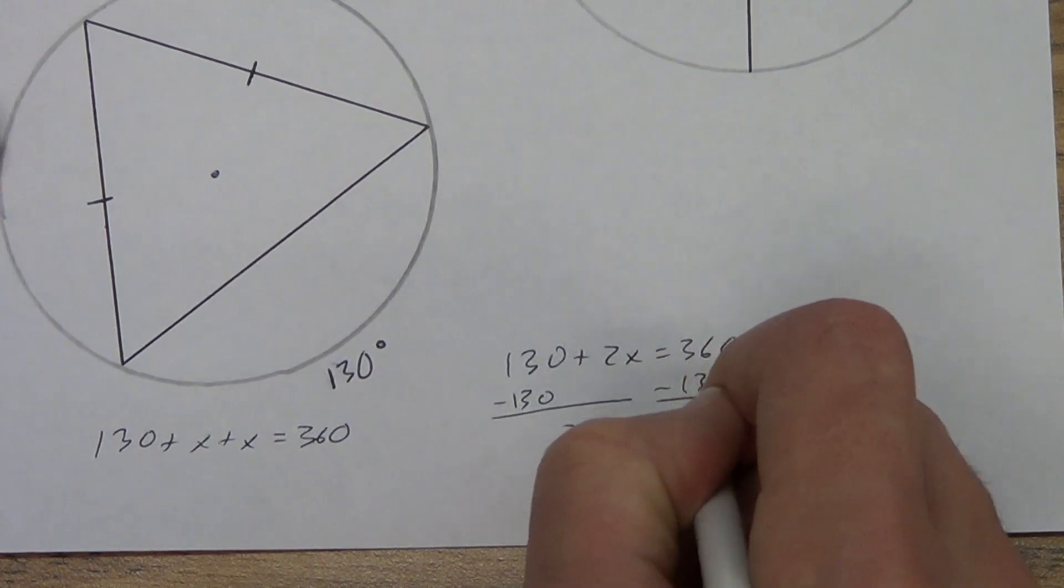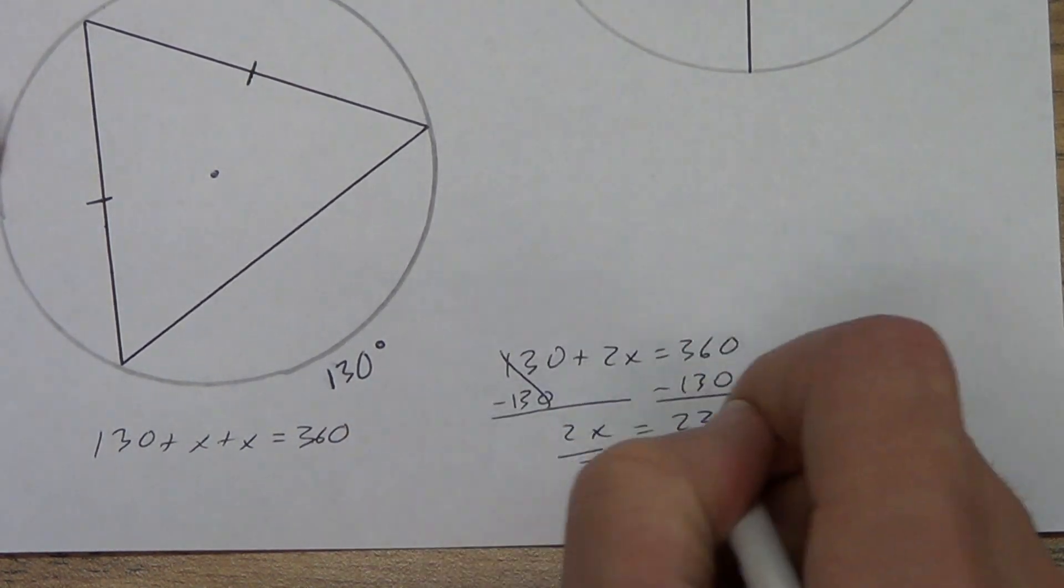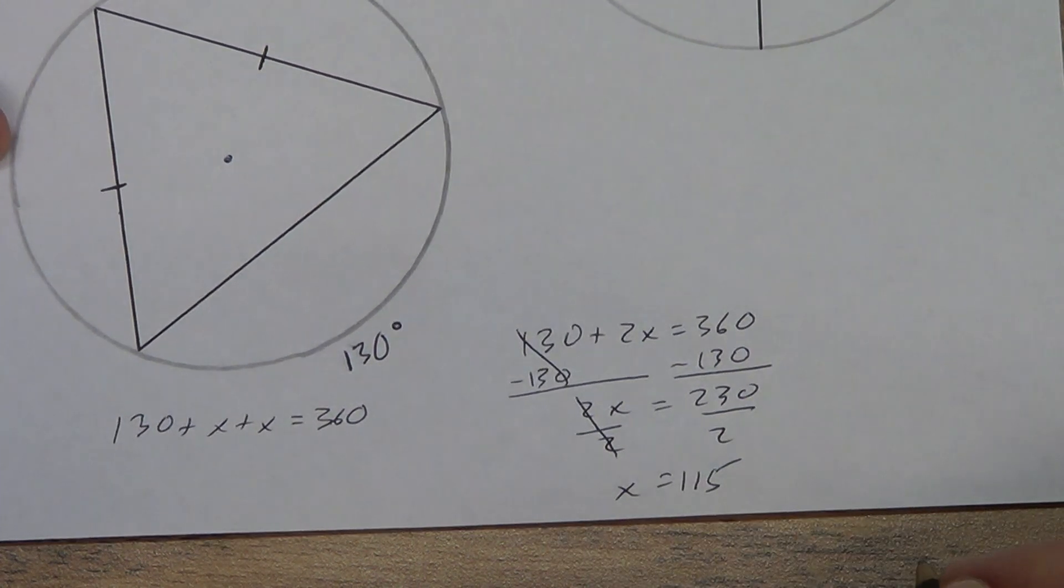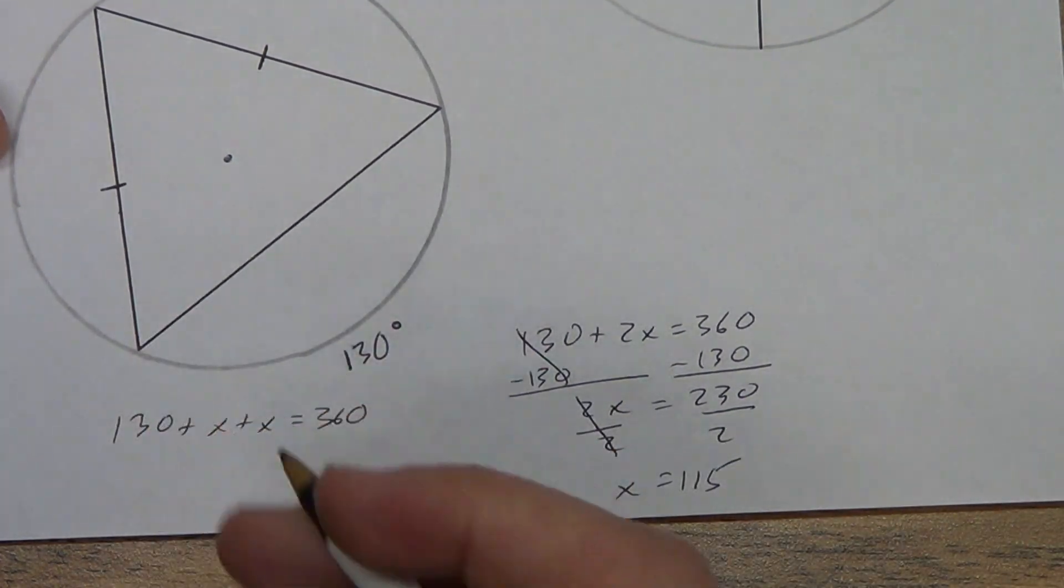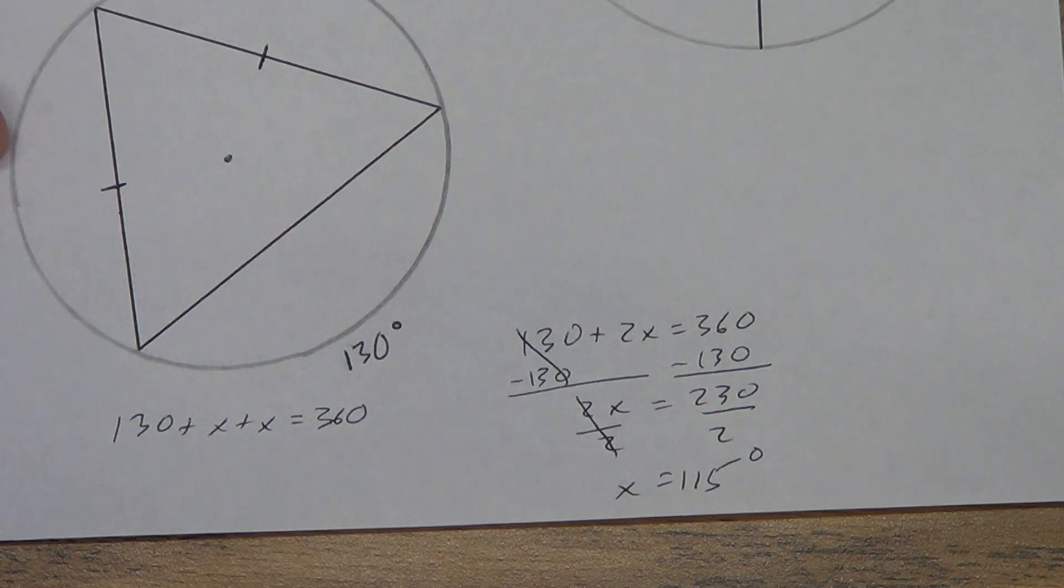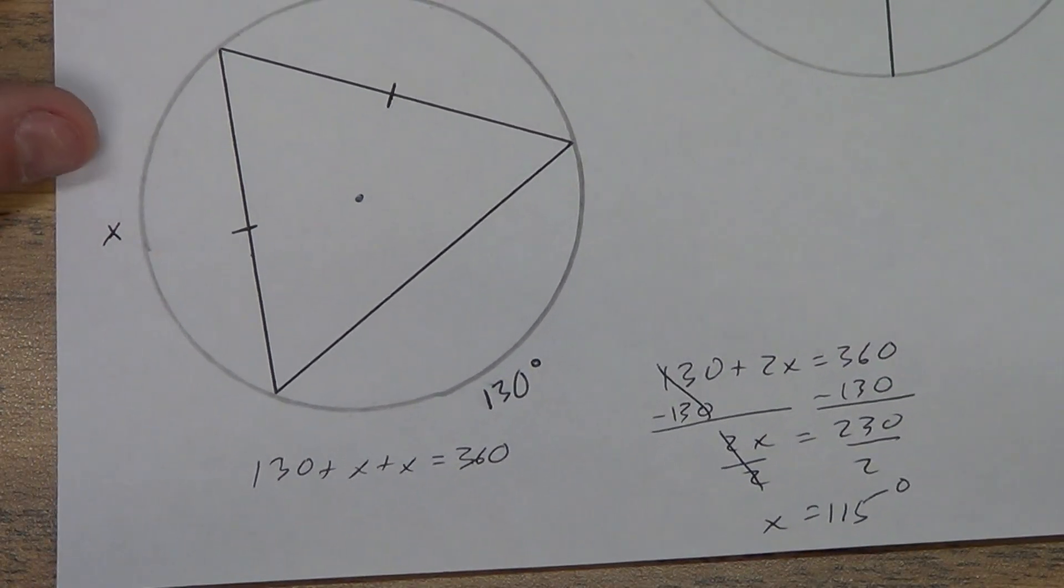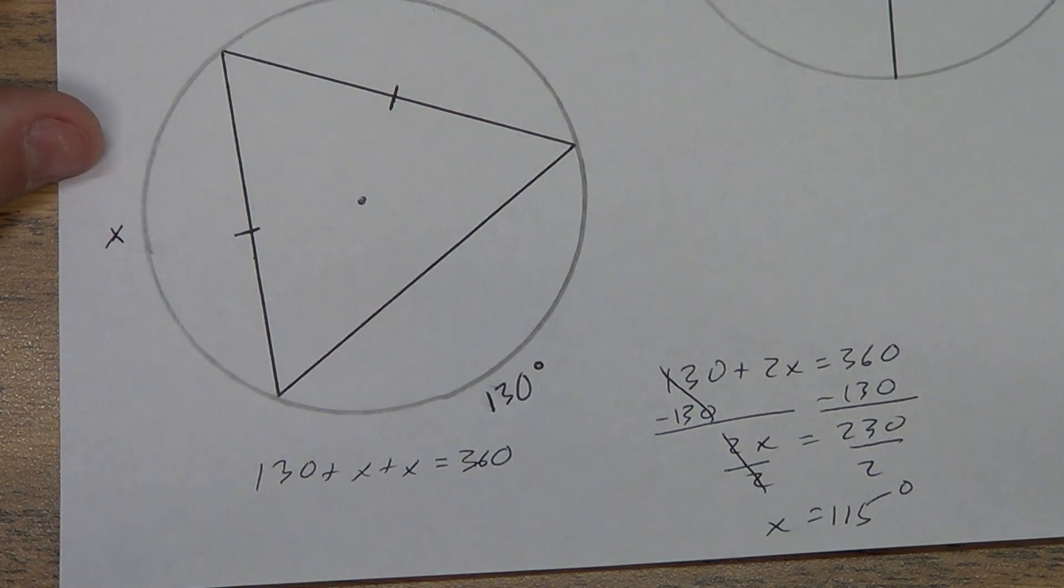2x equals 230. Divide by 2. x equals 115. Since it's an arc and it's a measurement, it's going to be degrees, not units. So there's just some applications of those theorems that we learned back in the first part of this lesson.